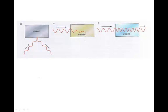We're going to move on to how waves can affect materials in different ways and how they interact with different materials. Some materials will actually reflect waves. If we've got a wave coming along and it hits the surface, it will reflect it back — so waves can be reflected.